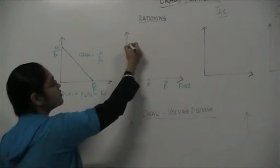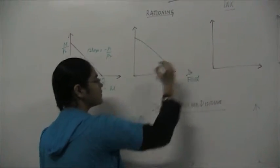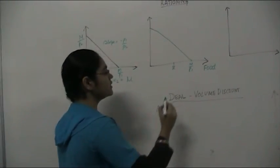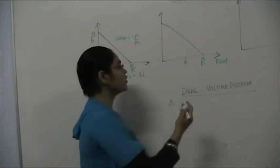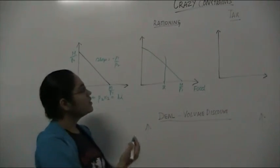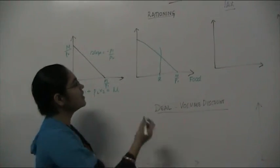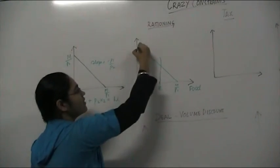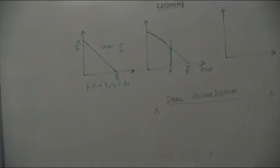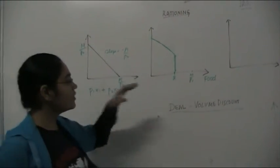So if your budget constraint is given by the prices, the government comes in and says you can't have more than x-bar units of food, which means the government chops off your budget constraint. You can't go beyond x-bar, so this portion of the budget line is no longer functional. The final budget constraint you end up having looks like this — that is how your budget constraint looks when you have rationing.